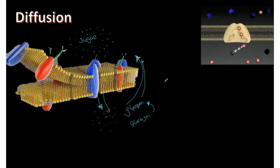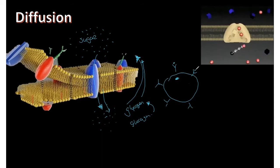There are a finite number of transporter proteins on a cell. When they are all occupied, they become saturated, and no more net flux occurs — no more movement of solute. The sugar on the outside continues to increase while the inside maintains equilibrium.